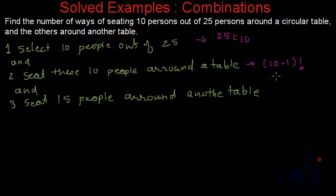Why is this 10 minus 1? This comes because we actually discount the arrangements which we can achieve by rotating one particular arrangement. For details, you can watch that video, and the link to that video is given in the description. Click there and watch that video which explains the arrangements around a circular table.